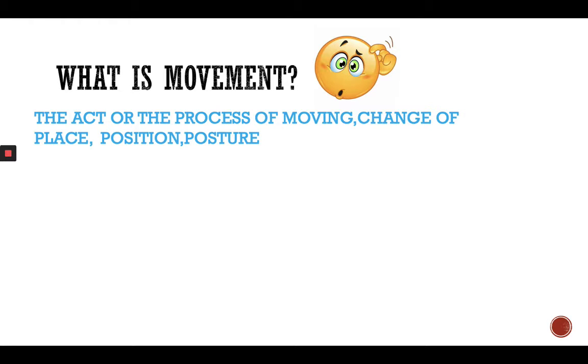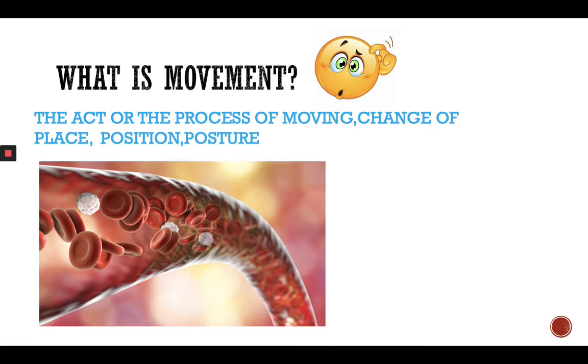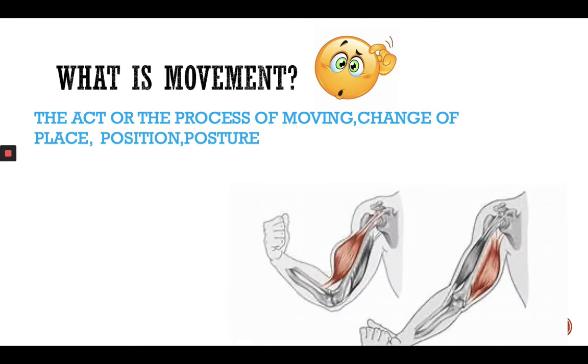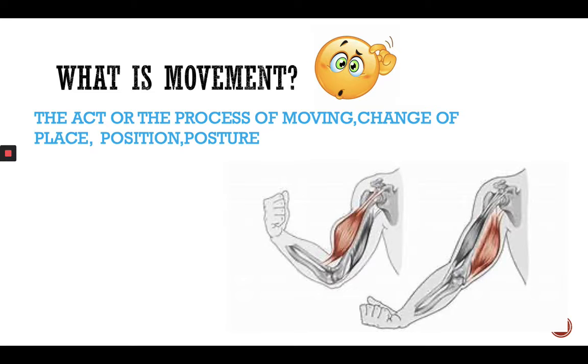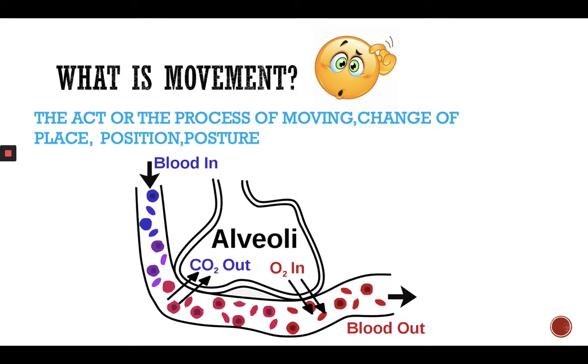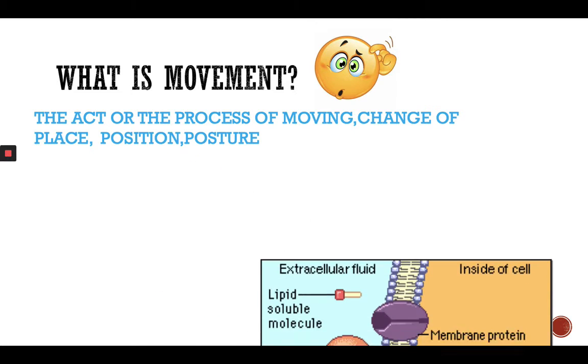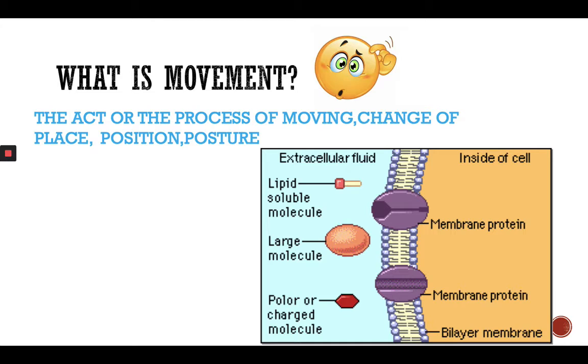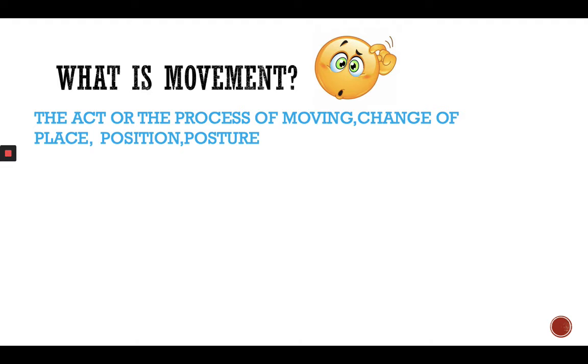We can see examples of movement from our body as well. How blood is actually moving through the blood vessels, how our muscles work, our skeletal muscles help us move our body parts, how gas exchange happens in the alveoli, and in our plasma membrane how essential nutrients get into the cell and waste materials get out of the cells. This is also actually movement in biological context.